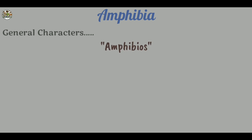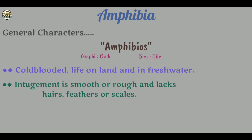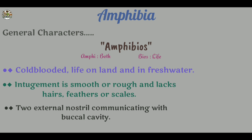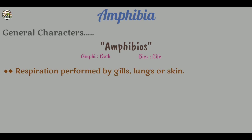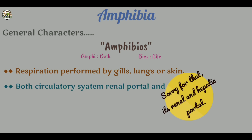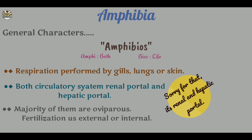Here we start with some basic characters of amphibians. The word amphibian comes from the Greek word 'amphibios,' which means to live a double life. These are cold-blooded vertebrates. Their integument is mainly rough, with no legs, hair, feathers, or scales. They have two external nostrils communicating with the buccal cavity. Respiration is performed by gills, lungs, or skin. They have both adrenal and portal circulatory systems. They are mainly oviparous, and fertilization is external or internal.